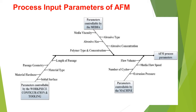Parameters controlled by the media are: media viscosity, abrasive type, abrasive size, abrasive concentration, polymer type and concentration. Parameters controlled by the machine are: number of cycles, extrusion pressure, media flow speed, and flow volume. These parameters determine the AFM process quality.